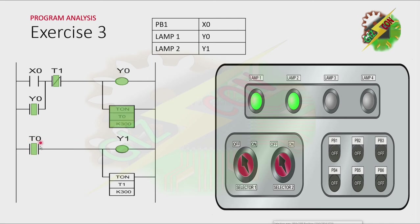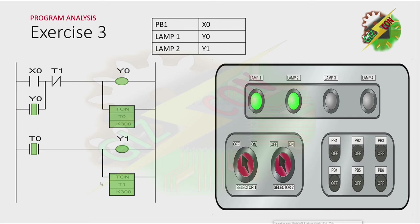After 2 seconds, all the contacts of T0 will be changed. That will cause Y1 to turn on, and at the same time T1 will be activated after 3 seconds. That will cause all the contacts of T1 to change. T1 will cause Y0 to turn off and T0 as well. Because T0 will be deactivated, Y1 will be deactivated also. And that will cause T1 to deactivate also.